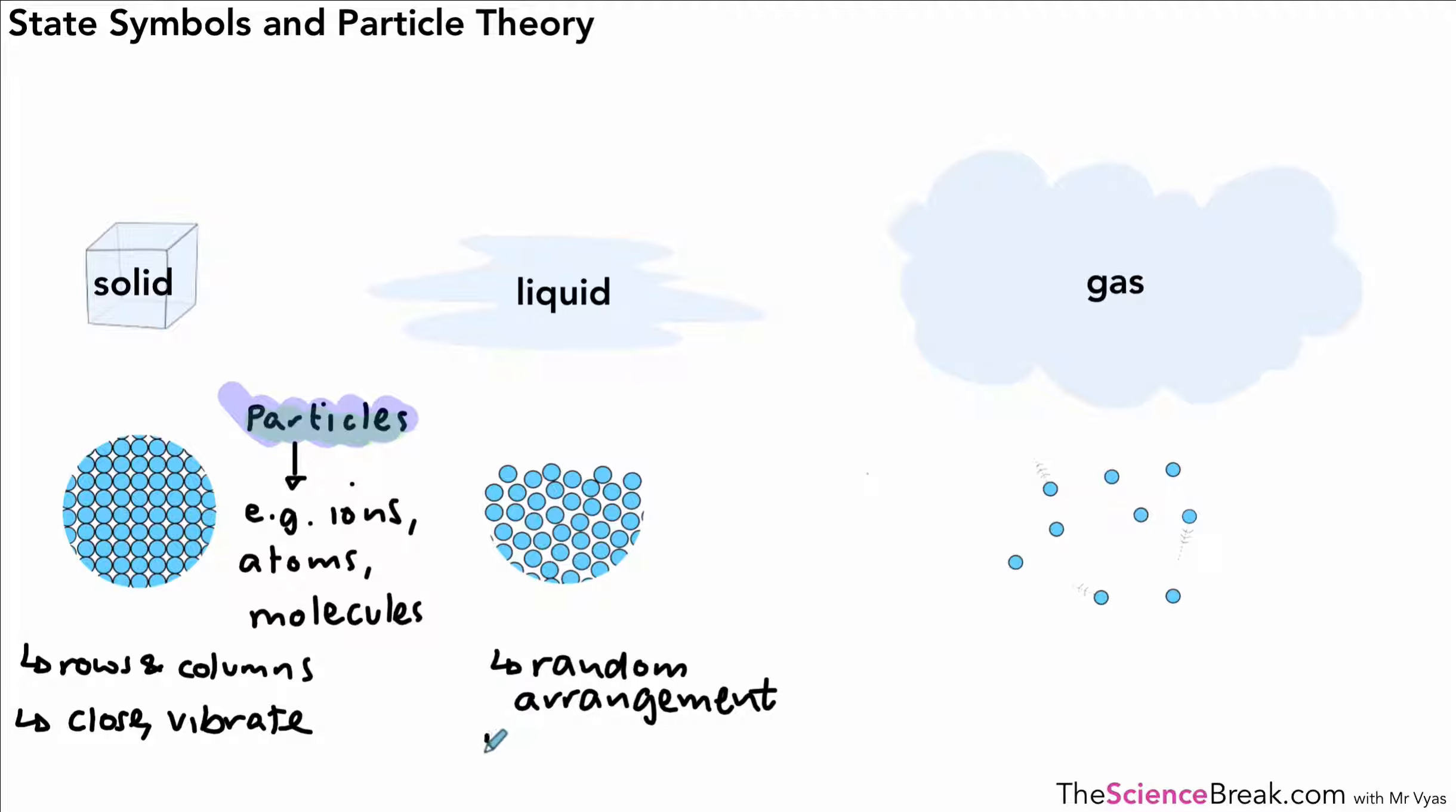For our liquid, we have the particles arranged more randomly. They are slightly further apart and they don't vibrate around a fixed position, but they do move randomly in different directions. For our gas, the particles are also arranged very randomly, but they are much further apart.